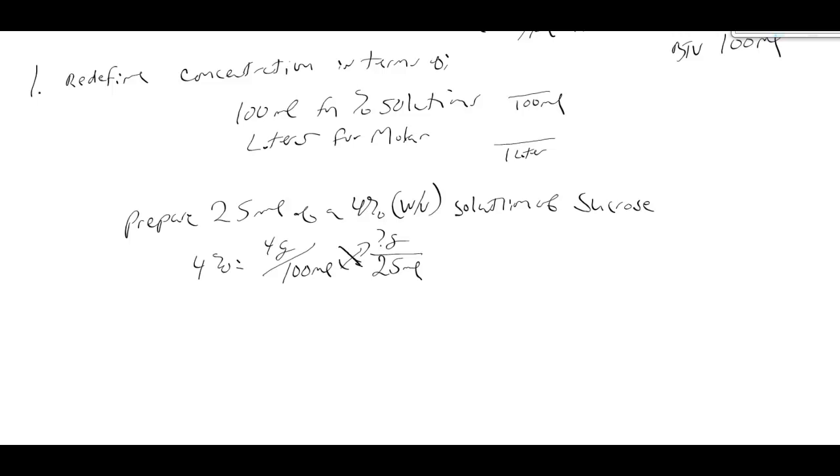So if we do our thing, 4 grams times 25 mL is equal to our question grams times 100 mL. And then to solve for that we divide both sides by 100 mL so 4 grams times 25 mL divided by 100 mL is going to equal our questionable grams.